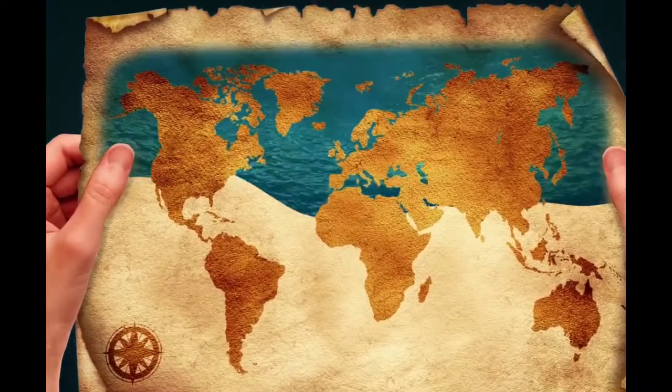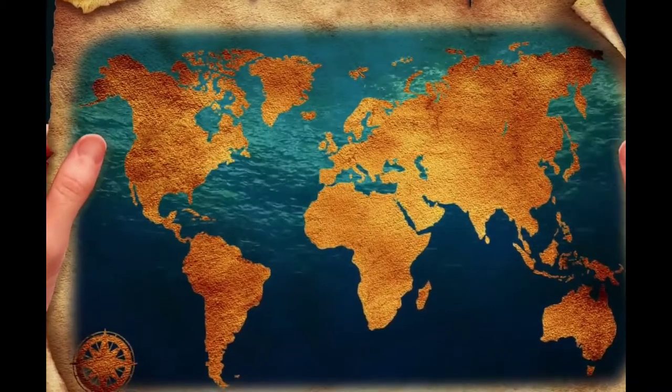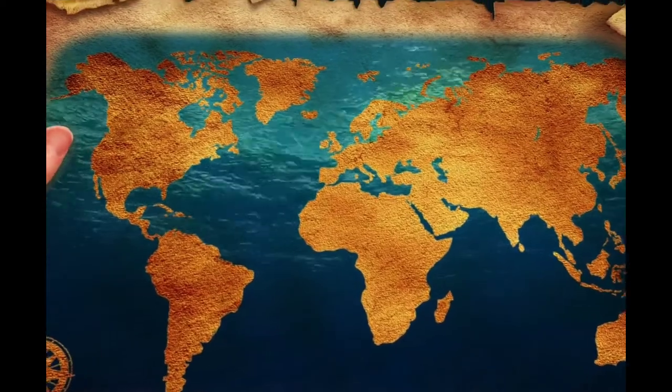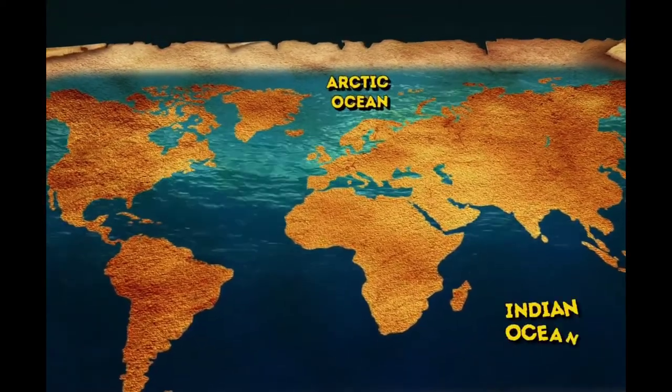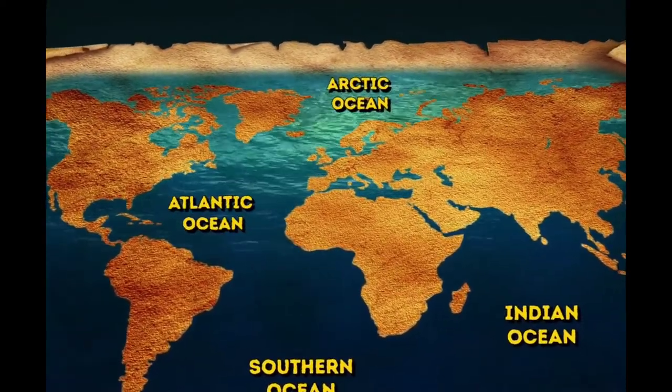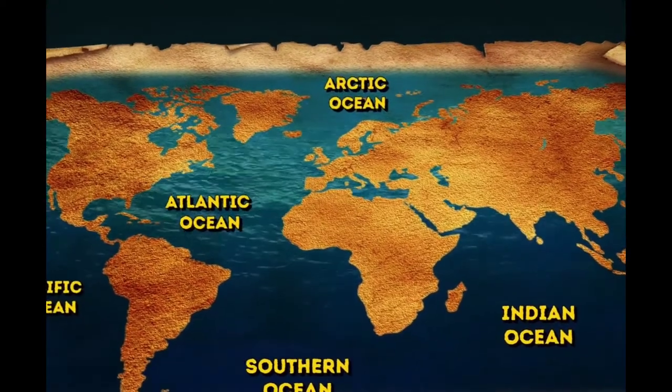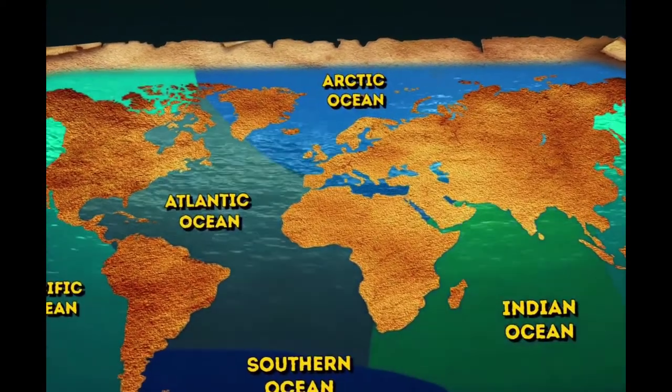When you look at the seas and oceans on the map, you might think that they just flow into each other. It seems like there's only one big ocean, and people just gave different names to its parts. Well, you'll be amazed how vivid the borders between them are.